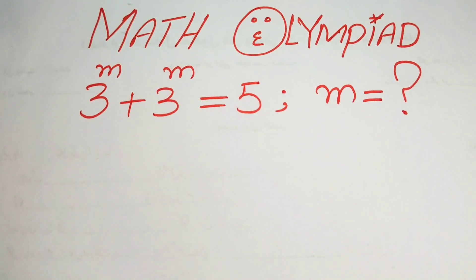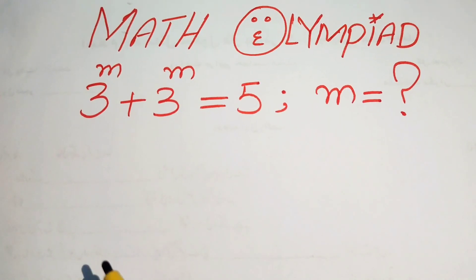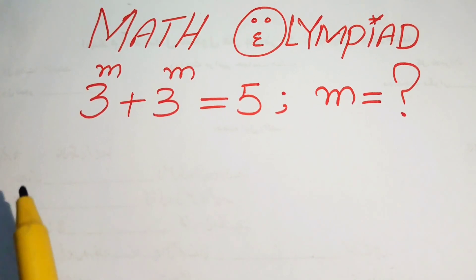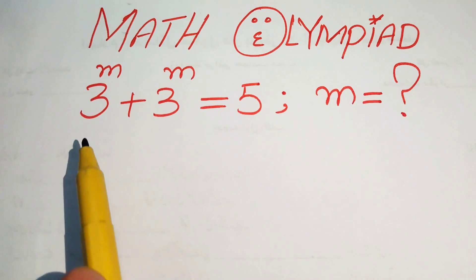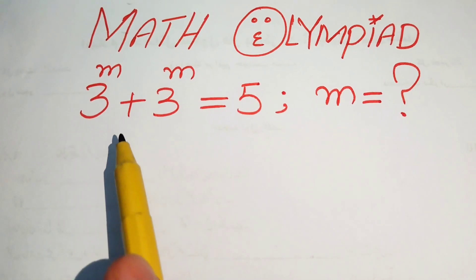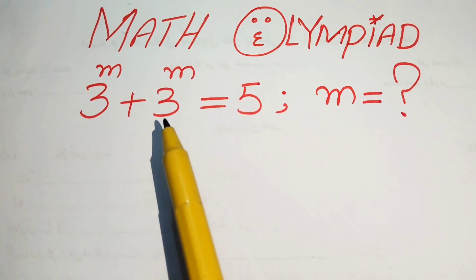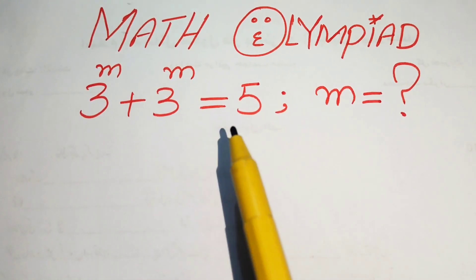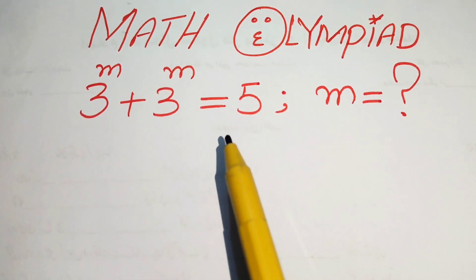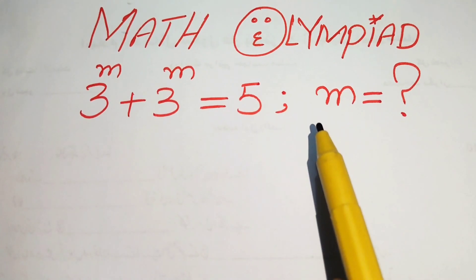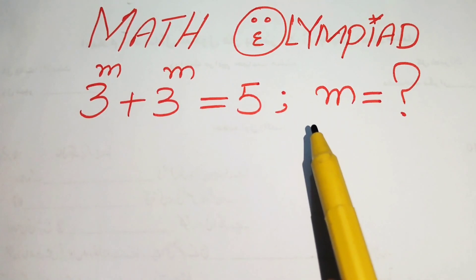Hello everyone, welcome. We are going to solve this exponential equation problem: 3 to the power of m plus 3 to the power of m equals 5, and we will solve this problem for the value of m.